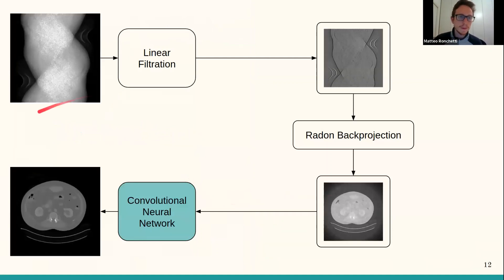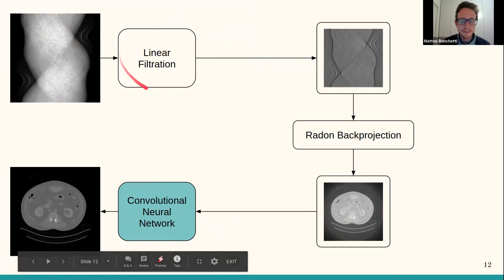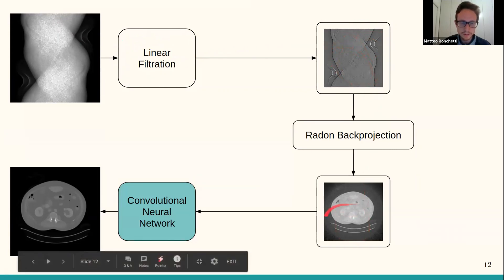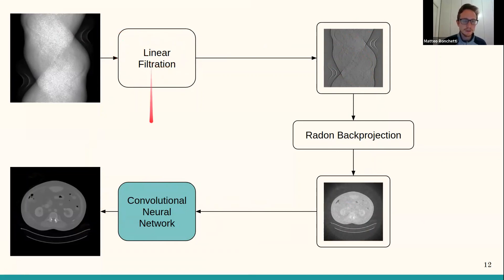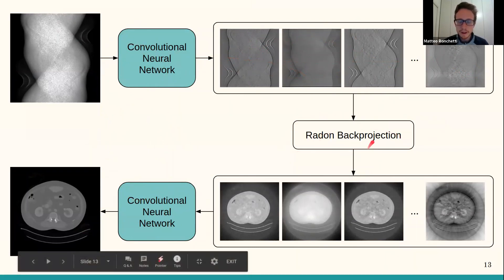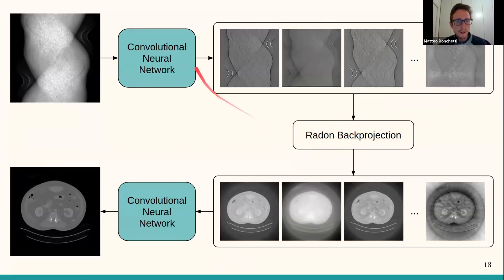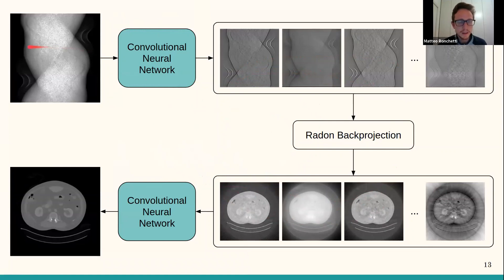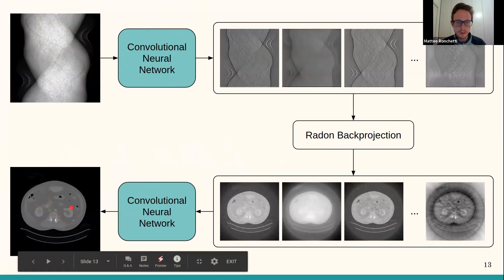The classic pipeline applies a fixed linear filtration such as filtered back projection to get a filtered sinogram, back-projects to create a noisy reconstruction, and then denoises with a neural network. Instead of a fixed linear filtration, we use a learned model that produces multiple channels. This gives two neural networks connected by a back projection — a differentiable linear operation — so the whole system can be viewed as a single large neural network trained end-to-end from noisy measurements to denoised reconstructions.